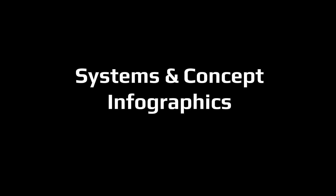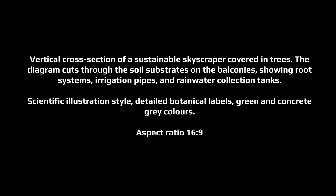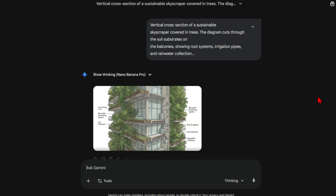Beyond technical details, diagrams can be used to explore and explain conceptual building systems. As mentioned before, don't use these as a final iteration, as the details are never perfect. Sometimes it's important to visualize invisible systems like energy and water that make a building work. For this example, I'll use a vertical forest section to explain sustainable themes and show how green design can be integrated into architecture. It did a great job piecing together irrigation pipes, rainwater tanks, and explaining them — it is quite generic, but it gets the main themes across.